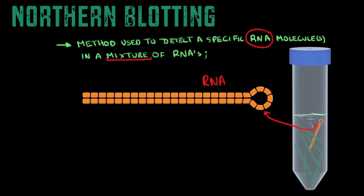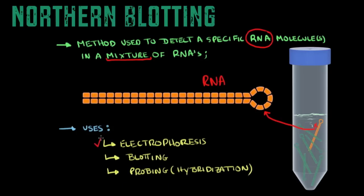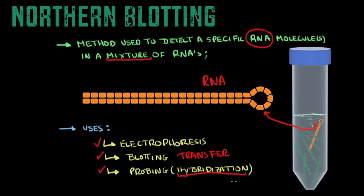Northern blotting follows a similar protocol to southern blotting, but also uses other methods common in biology. The first method is electrophoresis, which allows you to separate RNA molecules by size. The second is blotting — transferring molecules from one membrane to another. And the third method is probing, done through hybridization, where you find and label your target molecule using either a radioactive or fluorescent label.